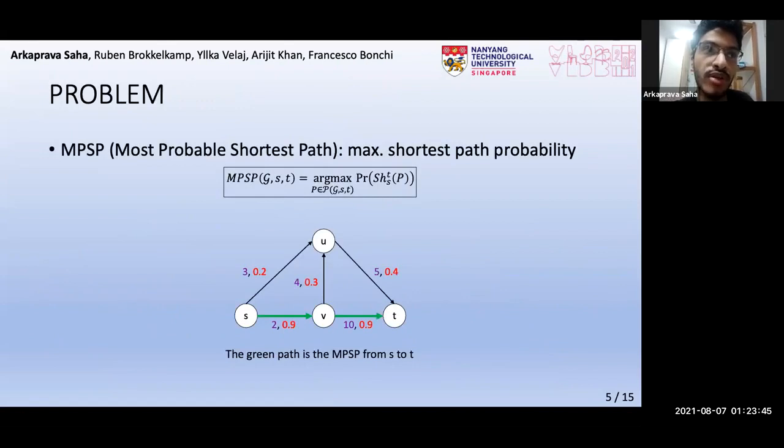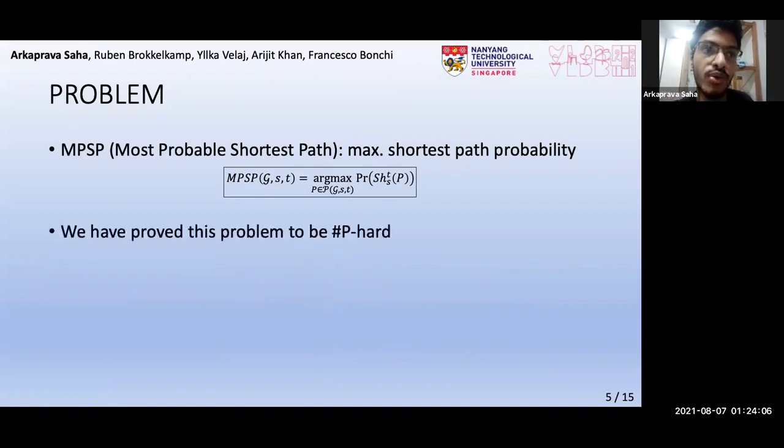We now state our problem. Given two nodes in an uncertain graph, find the path with the maximum shortest path probability. We call this path the MPSP, or the most probable shortest path. For example, in this graph, this green path turns out to be the MPSP from S to T, which is clearly not the shortest path considering only the edge lengths. We prove this problem to be sharply hard in our paper, and this is one of our contributions.